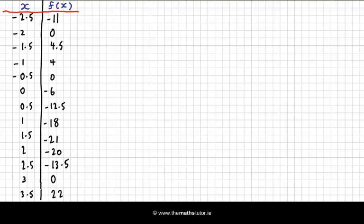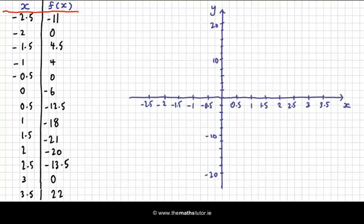I've plotted my x and y-axis. My domain is along the x-axis, and when x is -2.5, y is -11, so that's down here. When x is -2, y is 0, which makes -2 a root of this function. When x is -1.5, y is 4.5, which is here. And so on. I have all of my x and y coordinates plotted and now I can draw my function with a nice continuous curve.